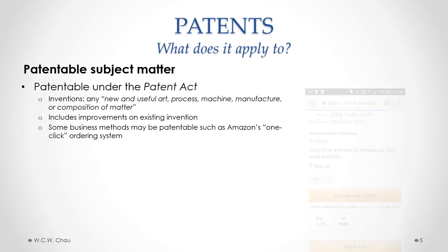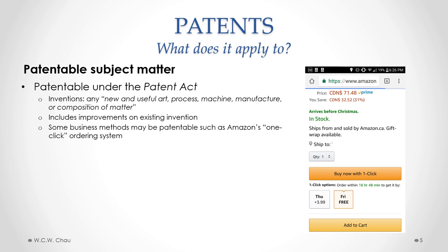The key example here is the Amazon one-click ordering system. When you go on Amazon's website and find something you want to purchase, Amazon has created a system where, as long as you've already registered and have an account, you can buy that item by clicking just one button, instead of the usual process of putting the item in a virtual shopping cart and going through many steps to check out. Amazon was granted a patent in Canada, having already received one in the U.S., though they did face significant difficulty and had to fight it in court before eventually winning.